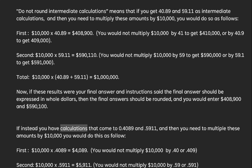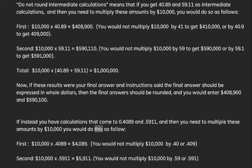If instead you have calculations that come to 0.4089 and 0.5911, and then you need to multiply these amounts by $10,000, you would do this as follow.